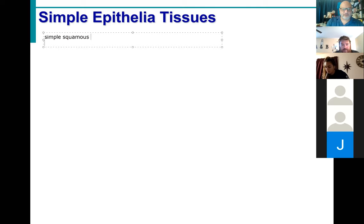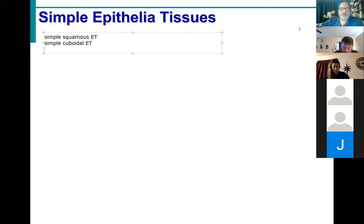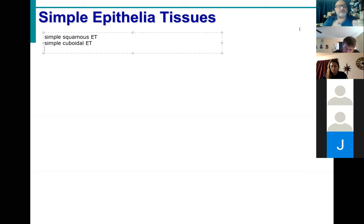Simple squamous epithelial tissue. What else? Cuboidal. And I don't care how you pronounce these things as long as you spell them correctly. I am a horrible speller — not only am I a horrible typist, but a horrible speller as well. When I was a student learning all these things, I would often mispronounce things in my head to say them the way they looked. So your goal in this class is to be able to spell these things, not necessarily say them. So simple squamous, simple cuboidal. What else? Simple columnar.